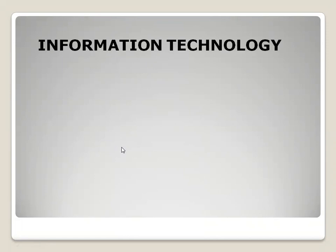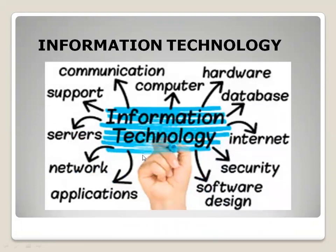What is information technology? With the help of a diagram I will be able to explain you. Information technology is related to data, hardware, computer, security, design, the applications we use, client-server, networking, and software areas. This is all related to information technology.